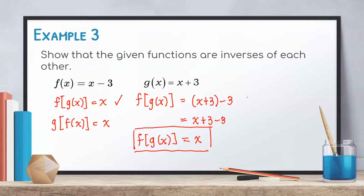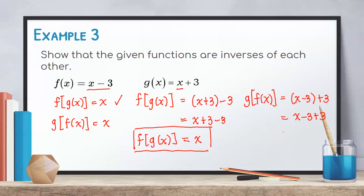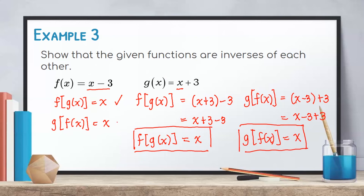For the second condition, g of f of x: we substitute f of x into the x of g of x, giving us x minus 3 plus 3. Simplifying, negative 3 plus 3 is 0, so we have x. Therefore, g of f of x is also equal to x. Since both compositions are satisfied, f of x and g of x are inverses of each other.